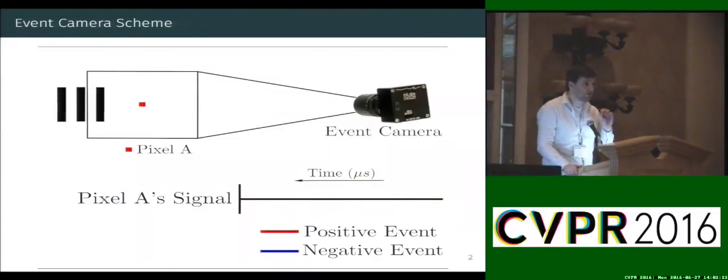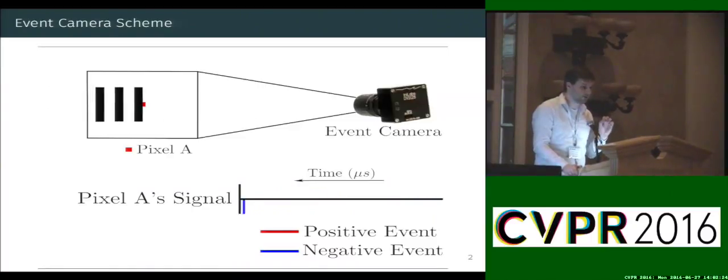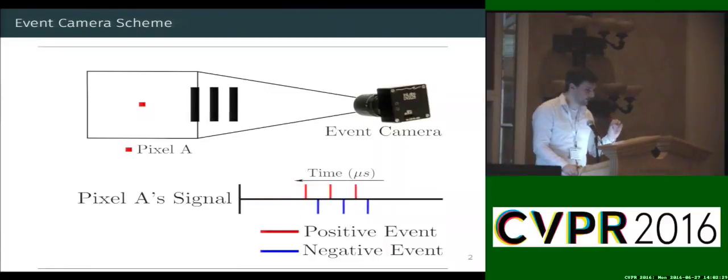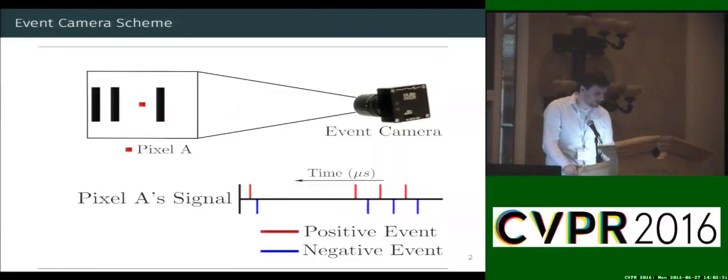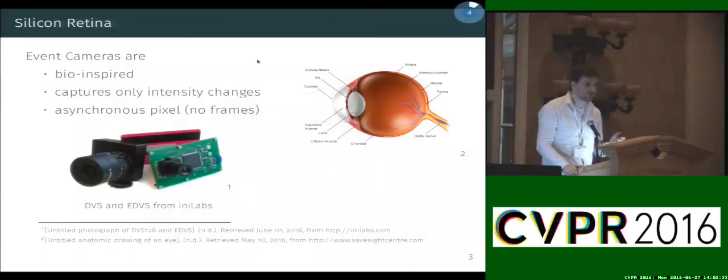However, when there is no change happening, then the event camera stays silent, so the pixels stay silent, and this is true for every pixel in the event camera. Such a design is inspired by neurons in biological retinas such as ours, and it offers a number of advantages.